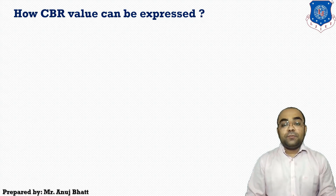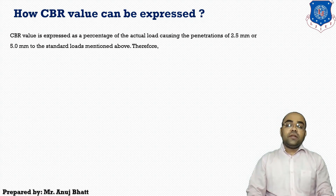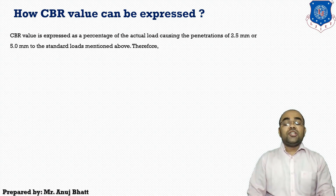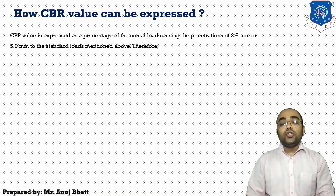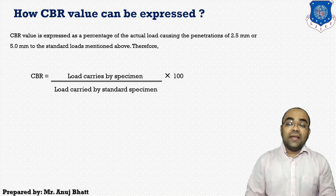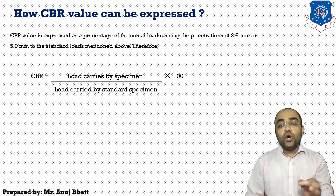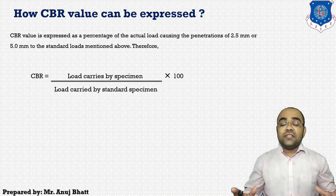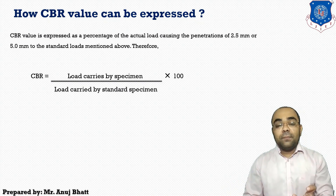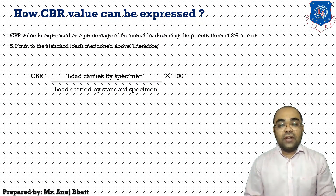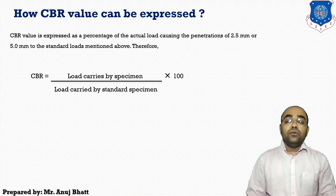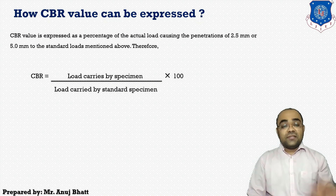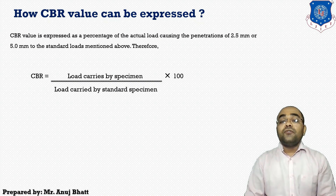The CBR value is expressed as a percentage of the actual load causing penetration of 2.5 mm or 5 mm relative to the standard loads. The formula is: CBR = (load carried by specimen / load carried by standard specimen) × 100. The standard load at 2.5 mm penetration is 1370 kg, and at 5 mm penetration it is 2055 kg.